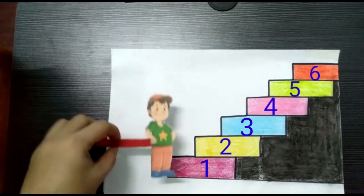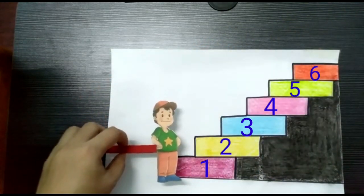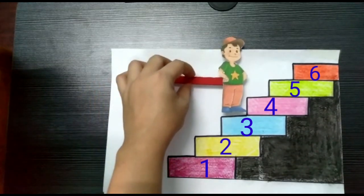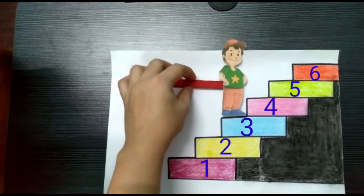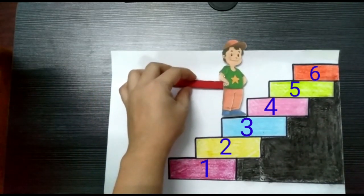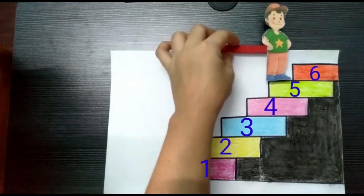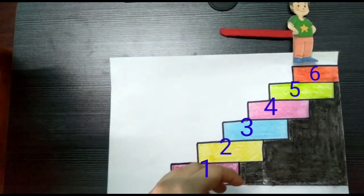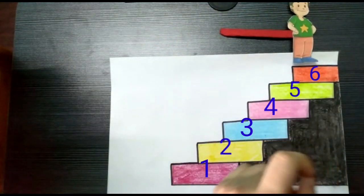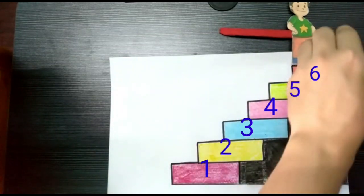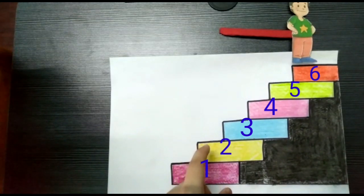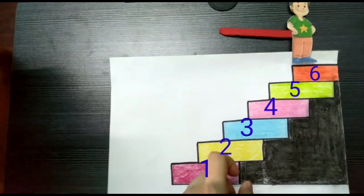Tom wants to move from down to up the stairs. When he starts moving 1, 2, 3, the numbers get increasing from small number to big number. 4, 5, 6. Therefore, ascending order means small number to big number. When we move from downstairs to upstairs, the number keeps on increasing. That's why we call it increasing order or ascending order. Understood, children?